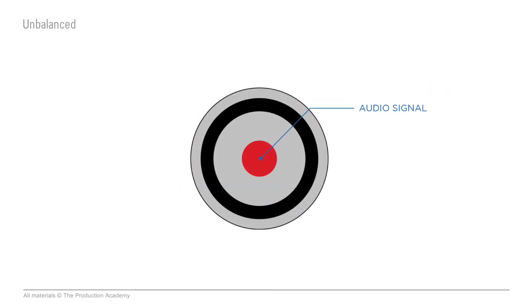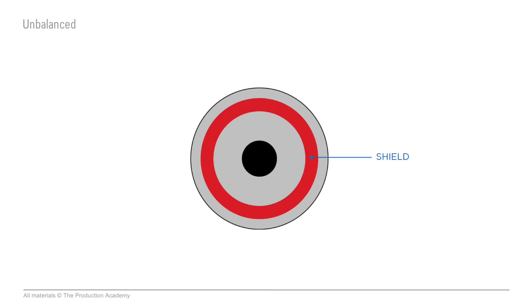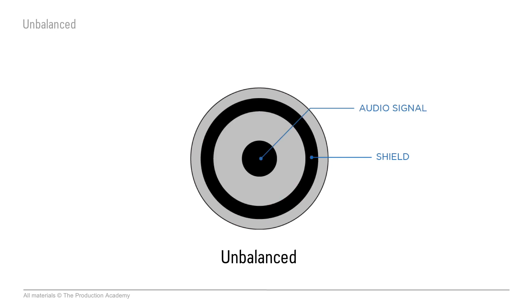So we have the center copper wire which carries the audio signal and we have the shield that surrounds it. This is the simplest way to make an audio connection and is called unbalanced.